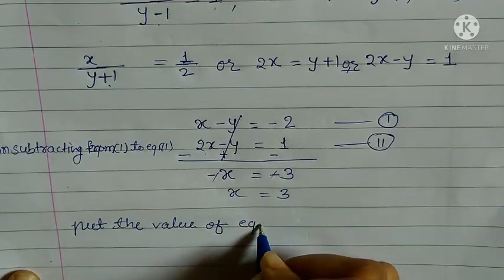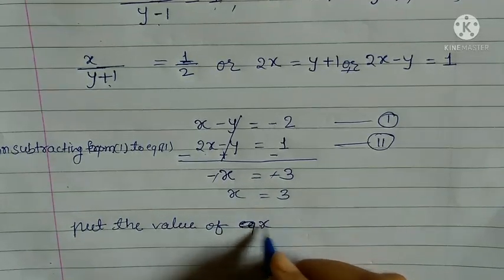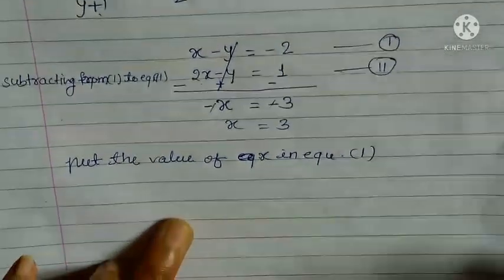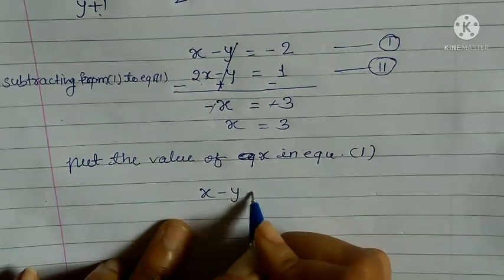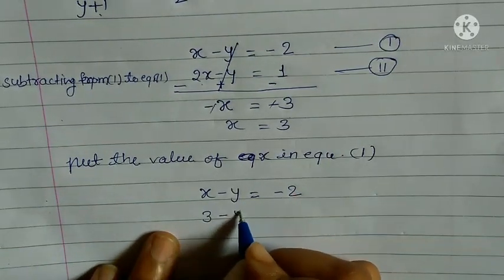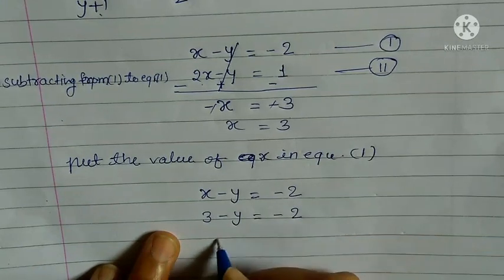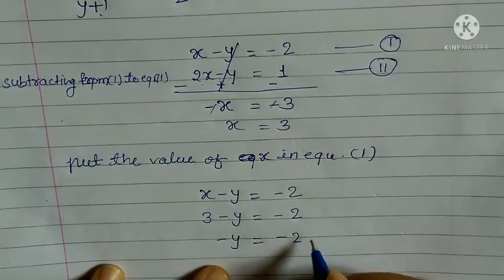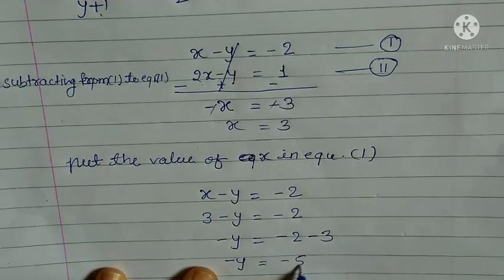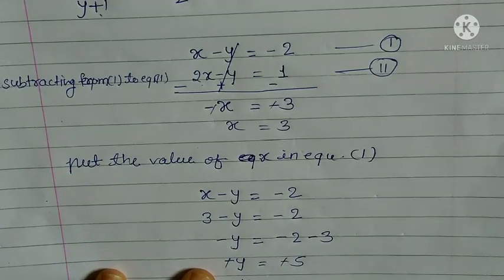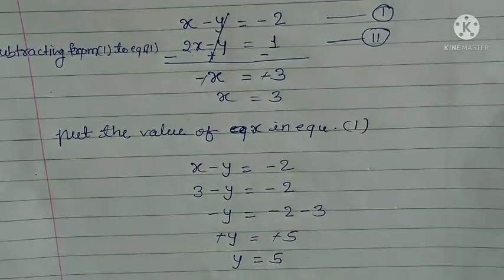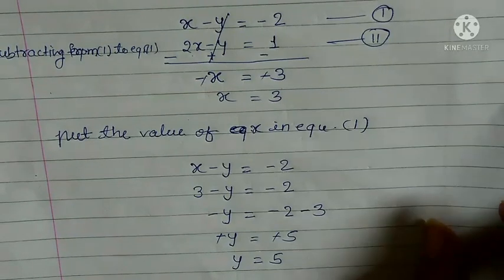Now put the value of x in equation 1. Equation 1 is x − y = −2. Substituting x = 3: 3 − y = −2, so −y = −2 − 3 = −5, therefore y = 5.